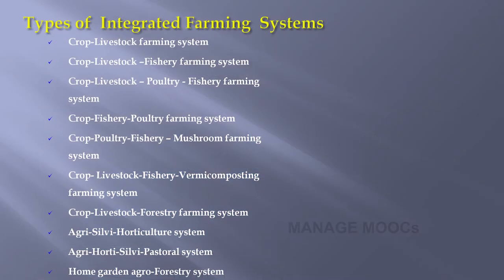There are several types of integrated farming system: crop-livestock farming system, crop-livestock-fishery farming system, crop-livestock-poultry-fishery farming system, crop-fishery-poultry farming system, crop-poultry-fishery-mushroom farming system, crop-livestock-fishery-vermicomposting farming system, crop-livestock-forestry farming system, agri-silvi-horticultural system, agri-horti-silvi-forestry system, home garden, and agroforestry system. The major aim of all these is combining allied sector enterprises into the main crop enterprise for optimum use of land, labor, and resources.